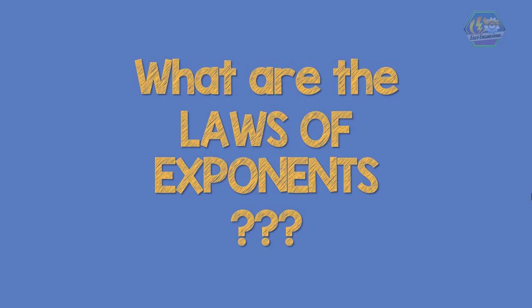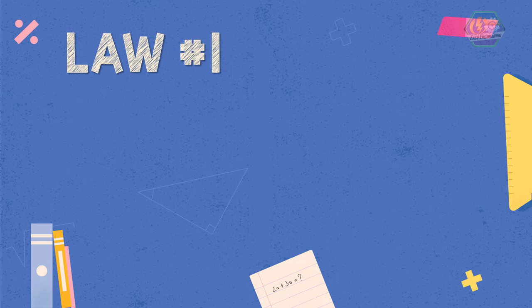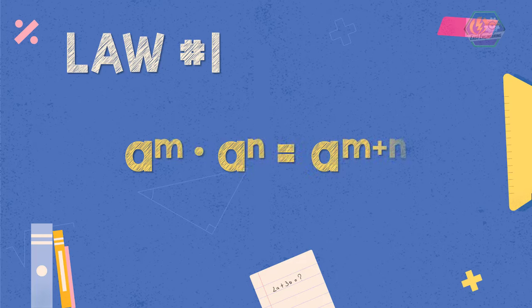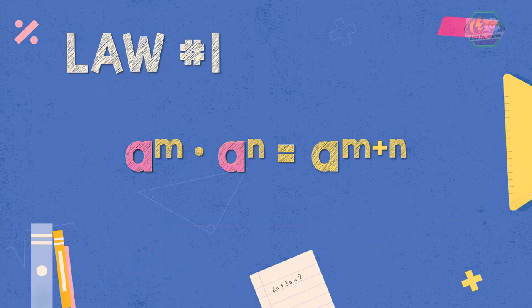So what are the laws of exponents? Law 1: a raised to the power of m times a raised to the power of n is equal to a raised to the power of m plus n, where a is a real number and m and n are positive integers. Based on the definition, if you have a number with the same base but different exponents, you can just copy the base and then add the exponents.